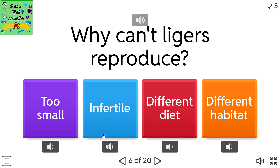Why can't ligers reproduce? Options: too small, infertile, different diet, different habitat.